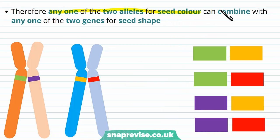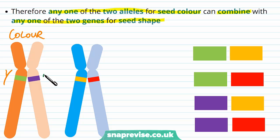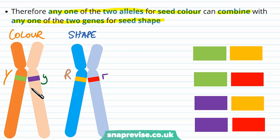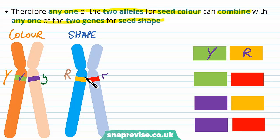The offspring has to inherit one allele of each chromosome pair — the paternal provides copies and the maternal provides copies, and the offspring has one of each. So the offspring may inherit yellow and round, yellow and wrinkled, green and round, or green and wrinkled, depending on which alleles from each chromosome pair are passed on.